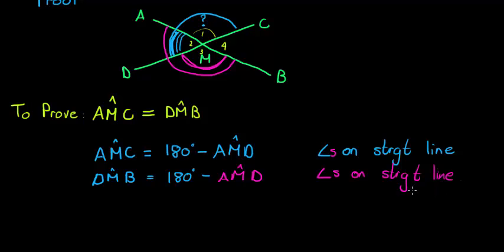Do you guys agree with me so far? Do you understand what I'm doing? Now you can see that since AMC is equal to this, but DMB is also equal to the same thing. You see, I can use the same formula to calculate both. It must mean that those two are equal. So AMC is equal to DMB.